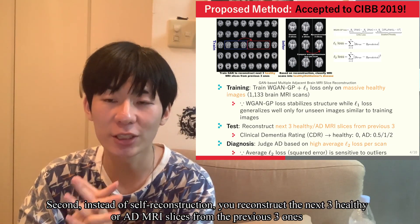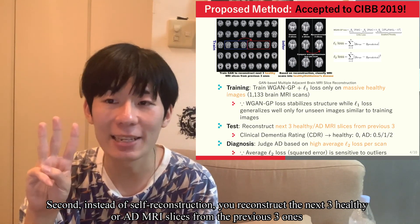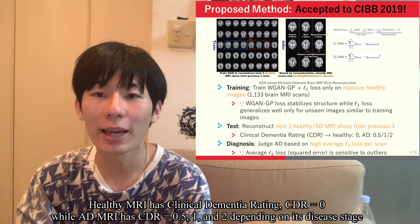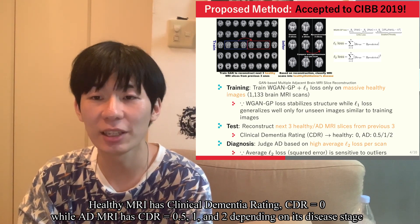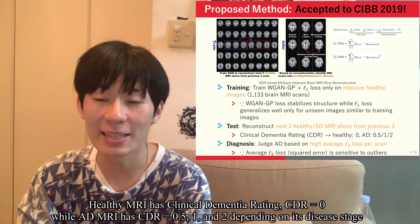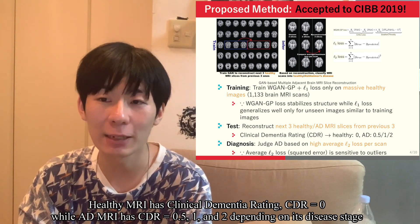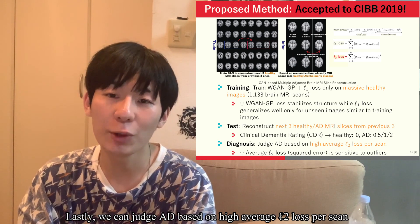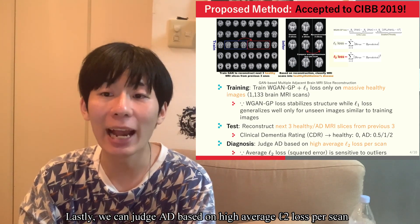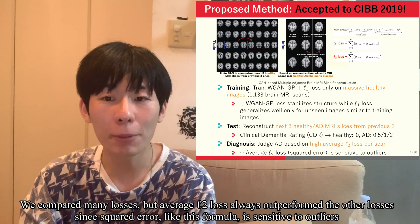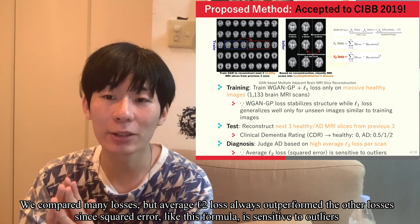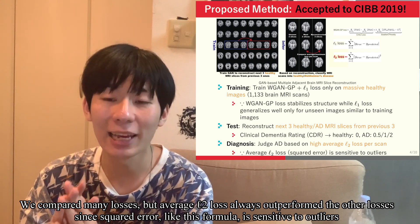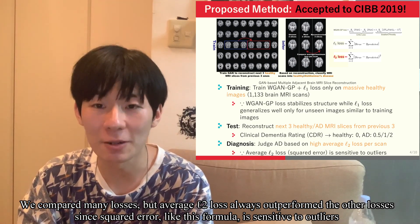Second, instead of self-reconstruction, you reconstruct the next 3 healthy or AD MRI slices from the previous 3 ones. Healthy MRI has clinical dementia rating CDR equal to 0, and AD has CDR of 1 and 2 depending on disease stage. Lastly, we judge AD based on high average L2 loss per scan. We compared many losses, but average L2 loss always outperforms the others, since squared error is sensitive to outliers.